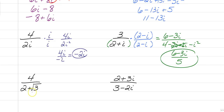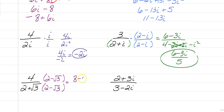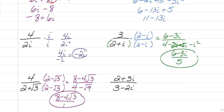Try simplifying these two on your own by multiplying the top and bottom by the conjugate. For the first one, you would have multiplied the top and bottom by 2 minus the square root of 3, since you cannot have square roots in the denominator. The top gives you 8 minus 4 root 3. On the bottom, 2 times 2 is 4, the middle terms cancel, and you're left with minus the square root of 9, which is 3. So the denominator is 4 minus 3, which equals 1. Your final answer is 8 minus 4 root 3.